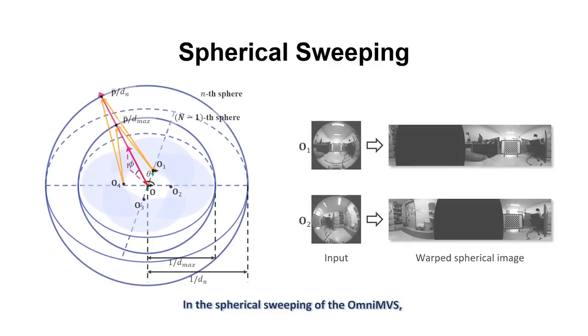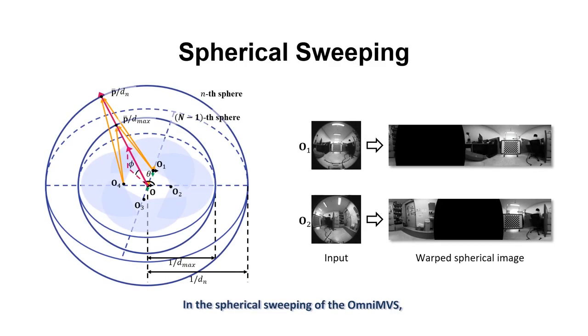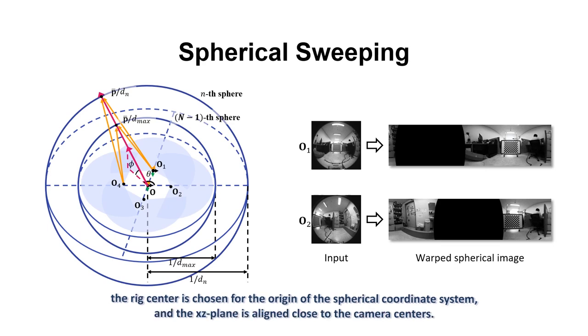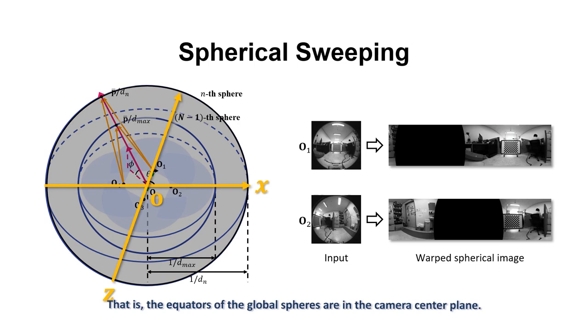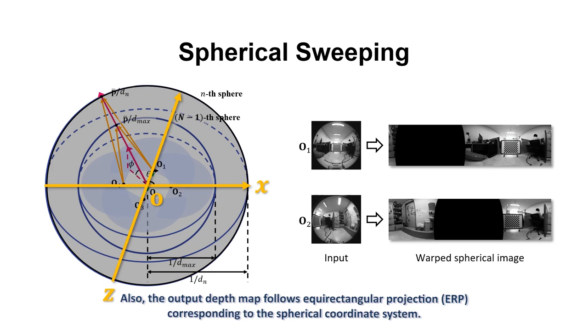In the spherical sweeping of the OmniMVS, the rig center is chosen for the origin of the spherical coordinate system. And the XZ plane is aligned close to the camera centers. That is, the equators of the global spheres are in the camera center plane. Also, the output depth map follows equirectangular projection corresponding to the spherical coordinate system.